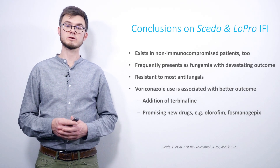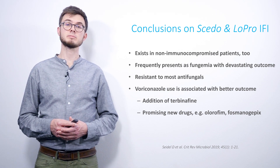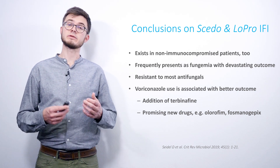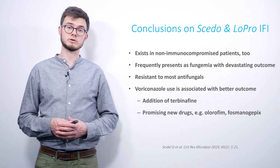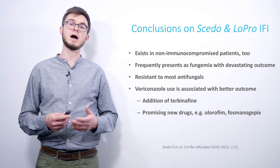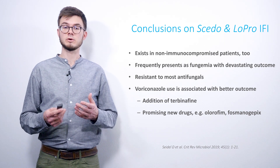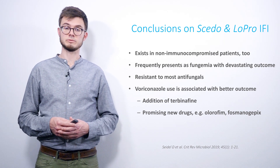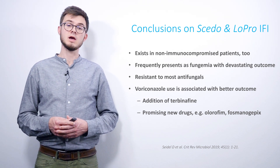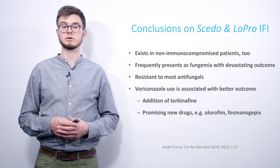So to conclude this talk: scedosporiosis and lomentosporiosis exist also in the non-immunocompromised patient population. These infections frequently present as fungemia and unfortunately have a devastating outcome. These species seem to be resistant to most antifungals due to high minimum inhibitory concentrations, and voriconazole treatment is associated with the best outcome. Promising options for treatment include the addition of terbinafine, and new drugs currently under investigation such as olorofine and fosmanogepix.